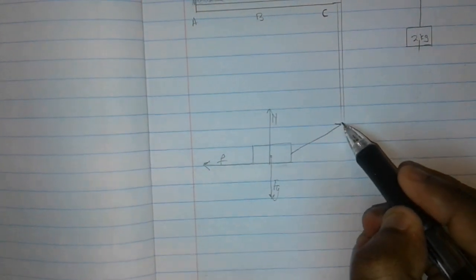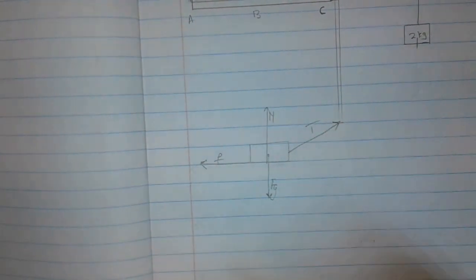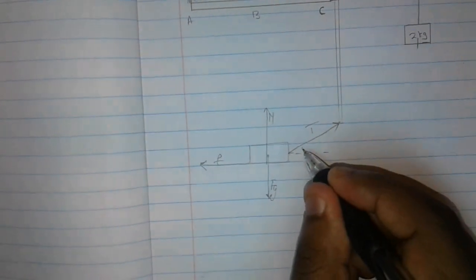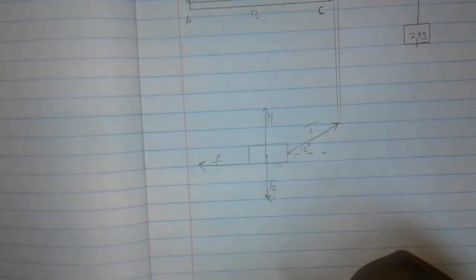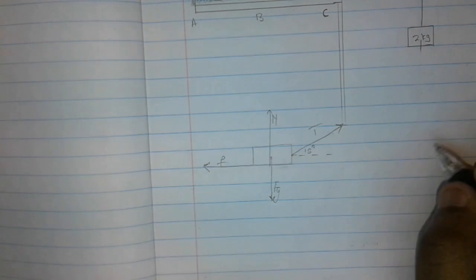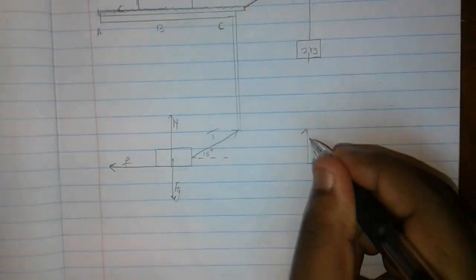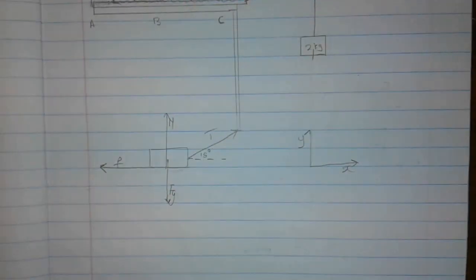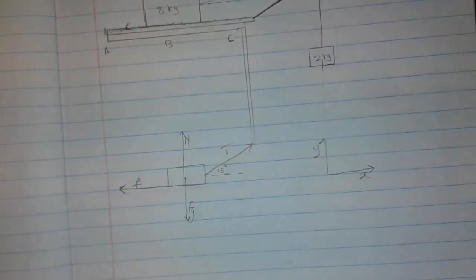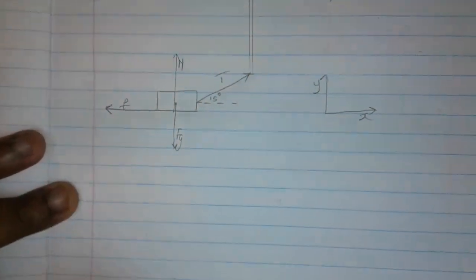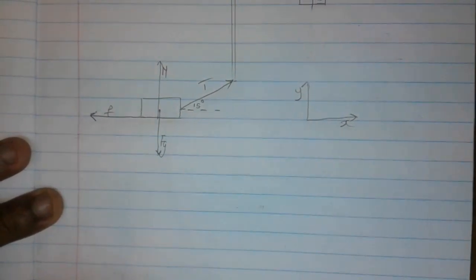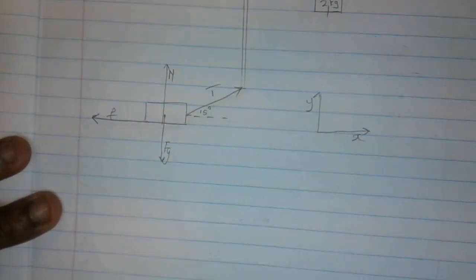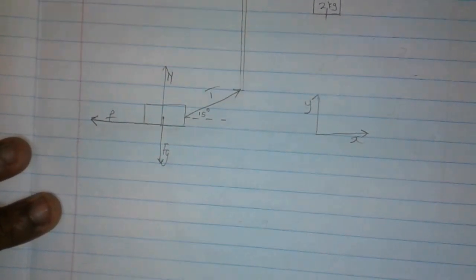We also have our tension — just T for tension — acting at 15 degrees from the horizontal. Let me draw a small set of axes, which will come in handy as we go along with the explanation. So if you were to try and find the values of all these forces acting on this block, what would you do?